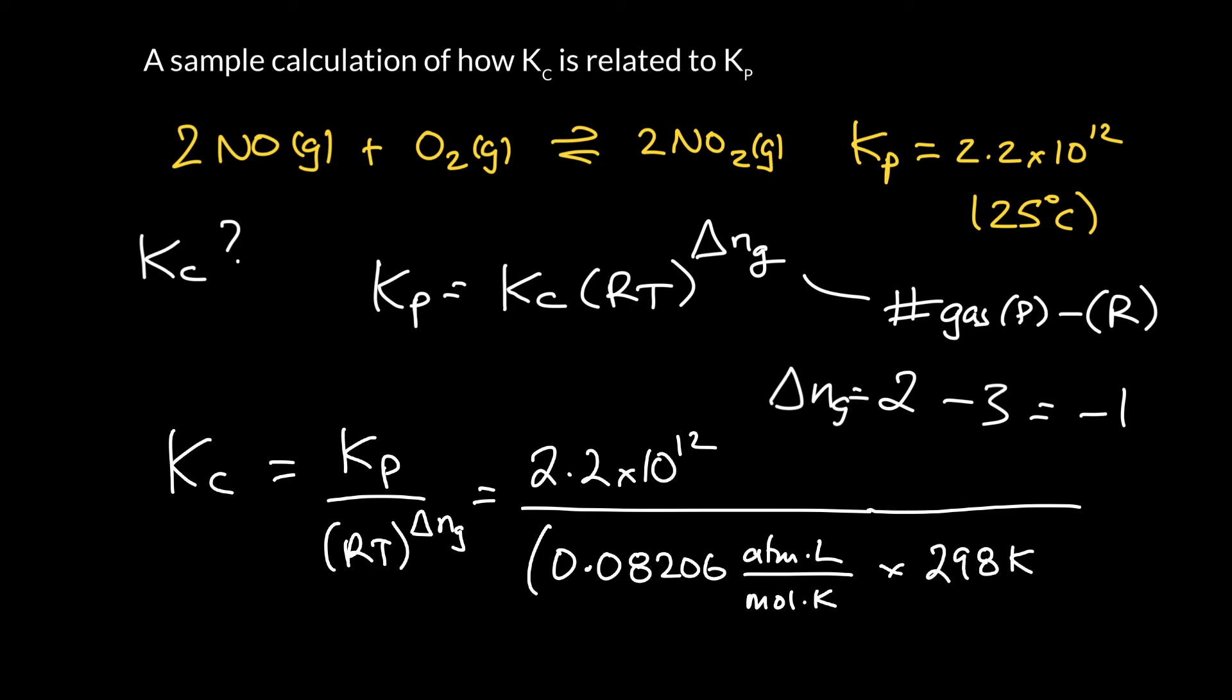So 25 degrees C is 298.15, because we don't have any decimal places, then just 298 Kelvin. And we're going to raise the whole thing to the minus 1 power. And again, if we go ahead and do that calculation, we're going to get 5.4 times 10 to the 13.